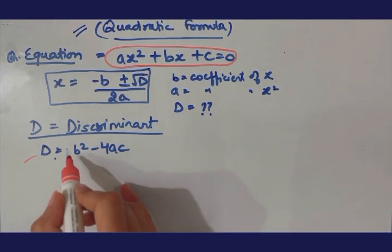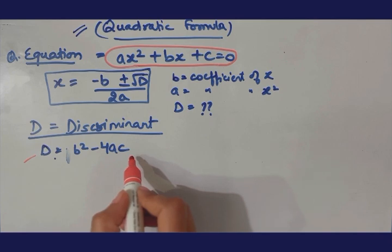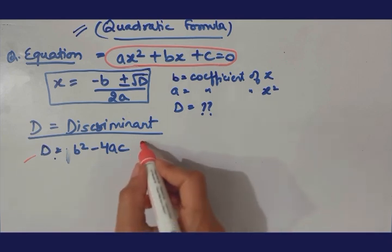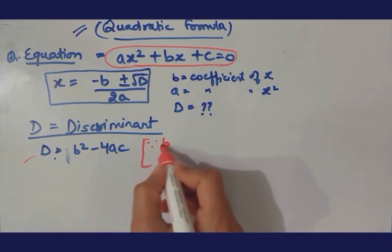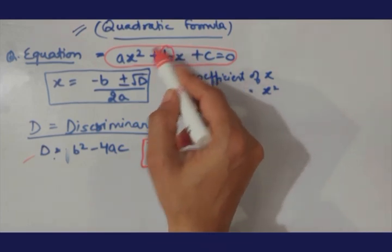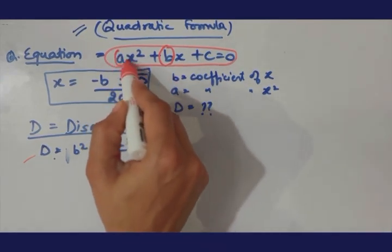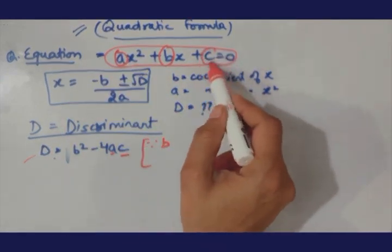Kyunki D jab aapke paas hoga tabhi aap usko formula mein daloge. Now here D is b square minus 4ac. You already know with all these things, b is what your coefficient of x, a is here your coefficient of x square and c is your numerical term.